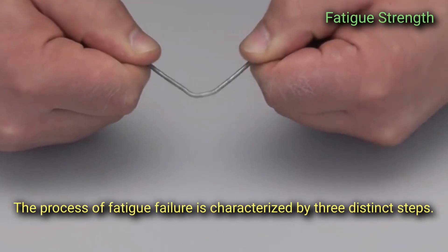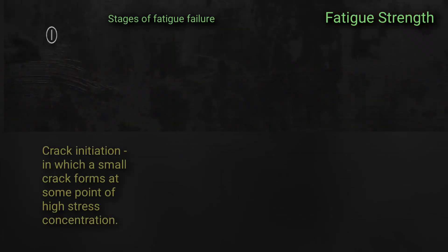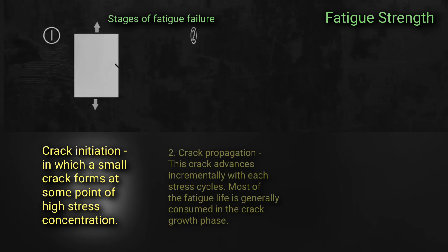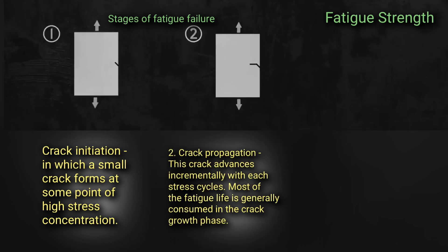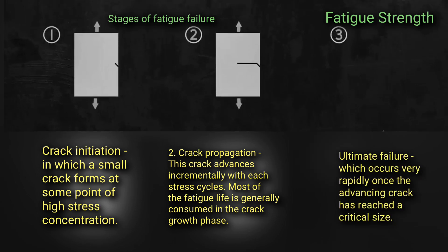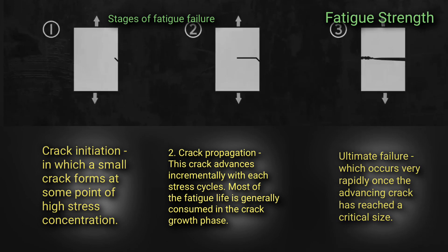The process of fatigue failure is characterized by three distinct steps. 1. Crack initiation, in which a small crack forms at some point of high stress concentration. 2. Crack propagation, this crack advances incrementally with each stress cycle. Most of the fatigue life is generally consumed in the crack growth phase. 3. Ultimate failure, which occurs very rapidly once the advancing crack has reached a critical size.